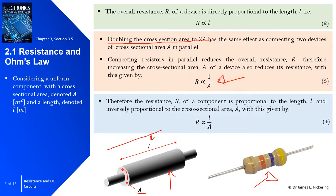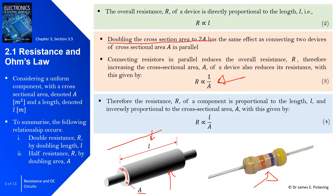This gives the relationship where resistance is directly proportional to length over area. To summarize: to double the resistance, we can double the length of the component; or to halve the resistance, we can double the area.